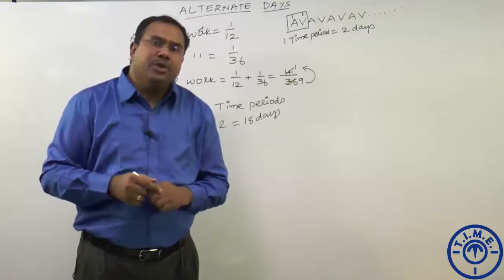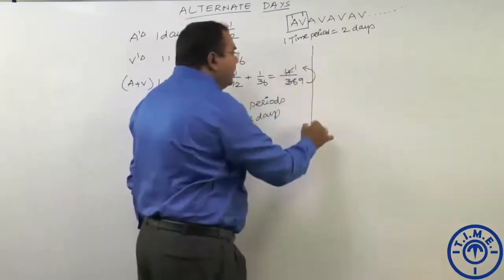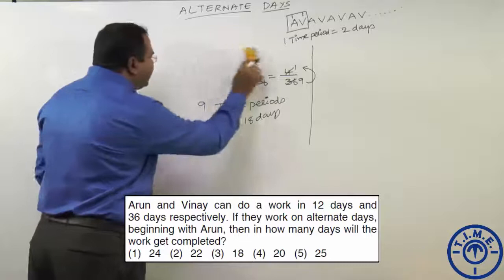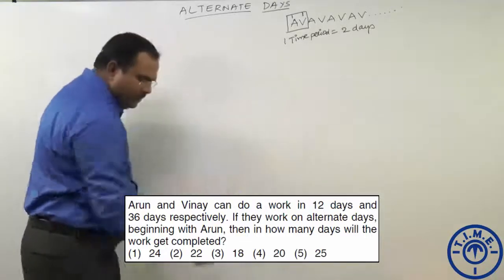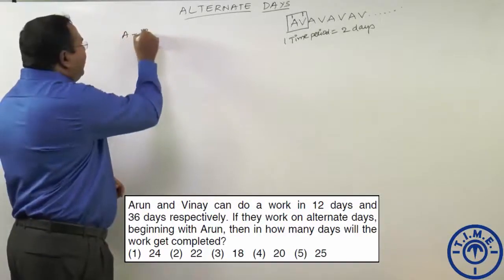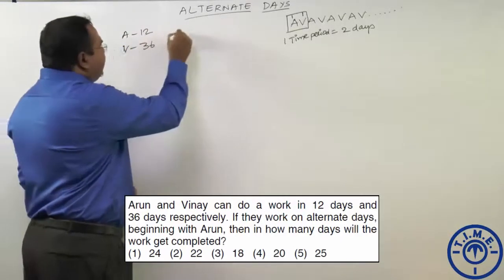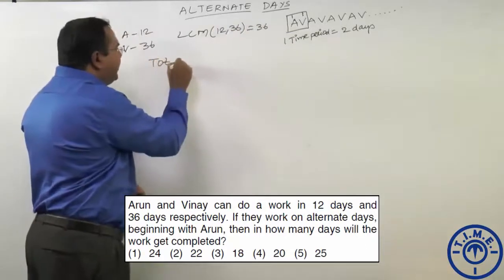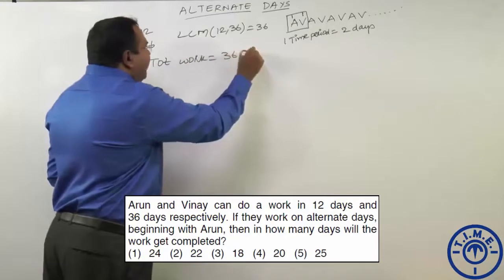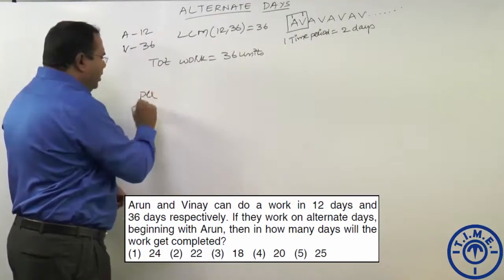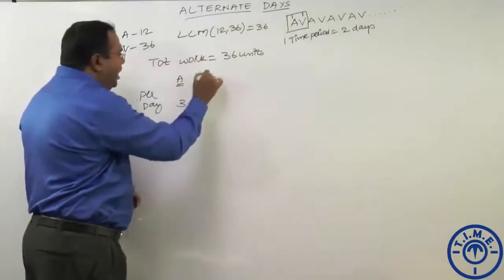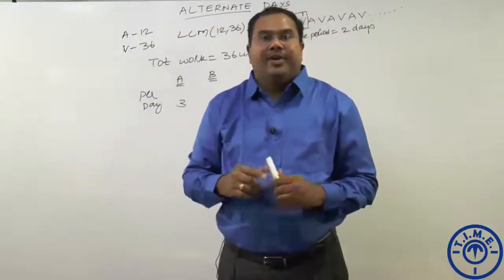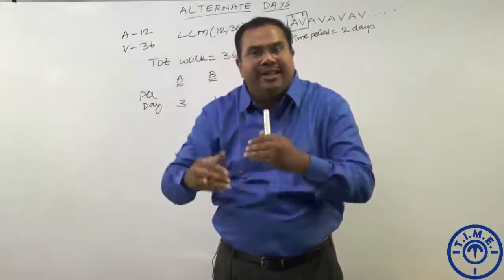We can solve the same question using the LCM method. A is working for 12 days and B is working for 36 days. The LCM of 12 and 36 is 36 units. Let us assume total work is equal to 36 units. Per day, A will do 36/12 = 3 units, and B will do 1 unit. They are working on alternate days — first day Arun, next day Vinay, third day Arun, fourth day Vinay — coming in on a rotational basis.